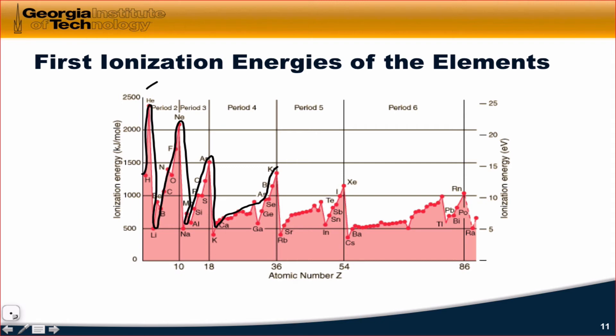In fact, it almost looks like a sawtooth wave. Something like this. It is trending downward a little bit this way, but this is definitely periodic behavior in the first ionization energies of the elements, and we'll talk about what that first designator means and why it's important here in a second.